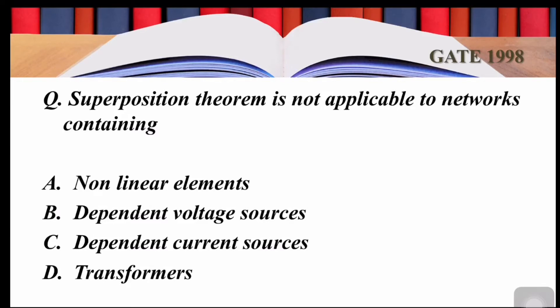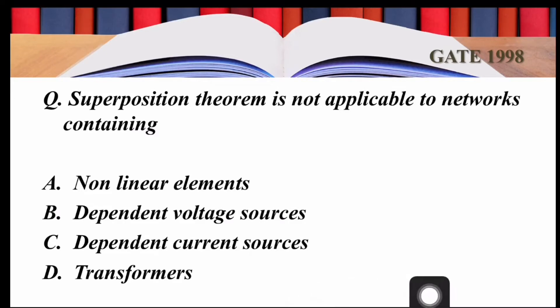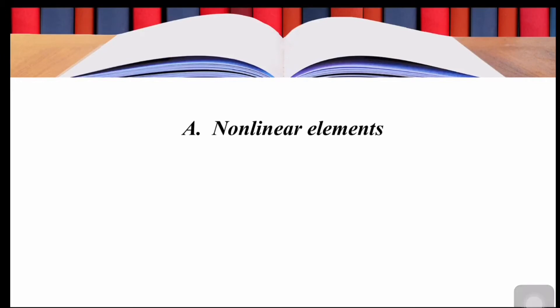The principle of superposition states that the response in a linear circuit having more than one independent source can be obtained by adding the responses caused by separate independent sources acting alone. This means superposition theorem is applicable only to linear circuits having independent sources, linear dependent sources, linear transformers, and linear passive elements such as resistors, capacitors, and inductors. Looking at the options, the answer is Option A: superposition theorem is not applicable to networks containing nonlinear elements.